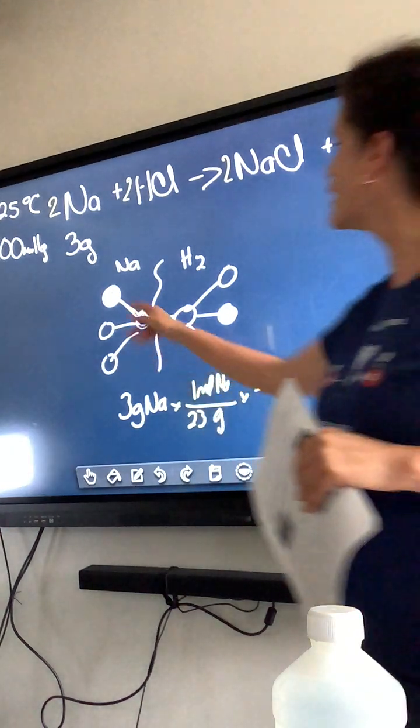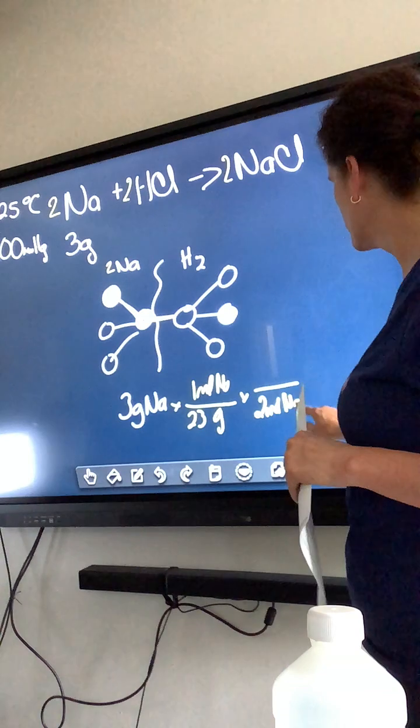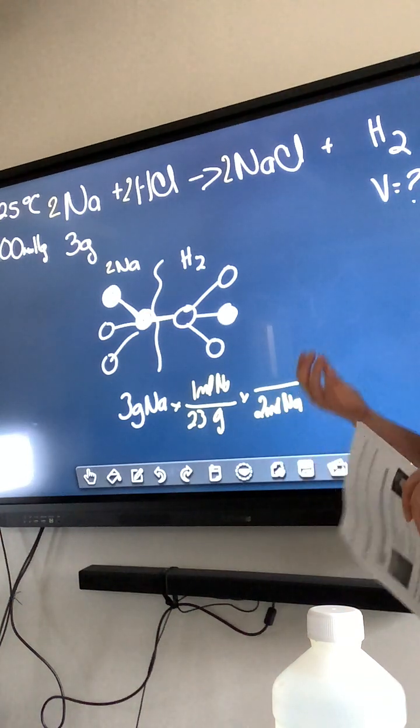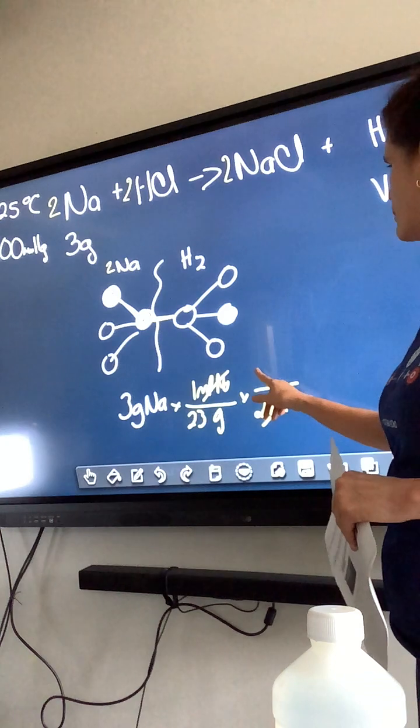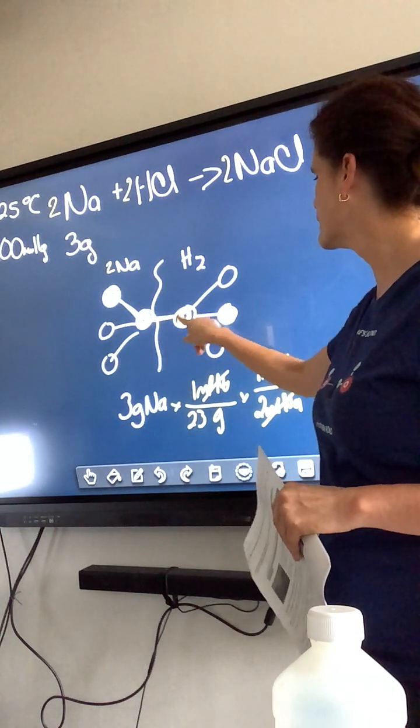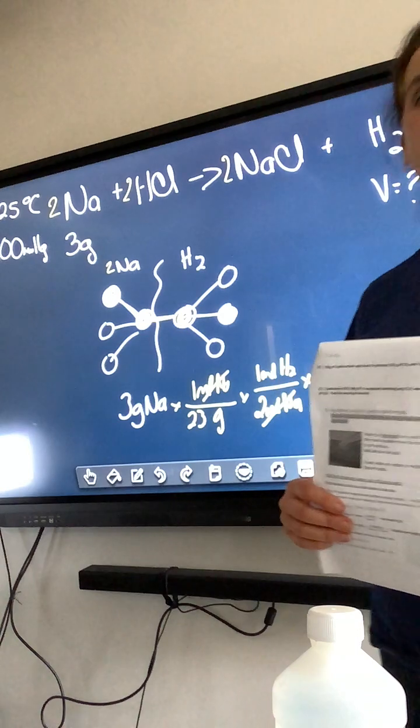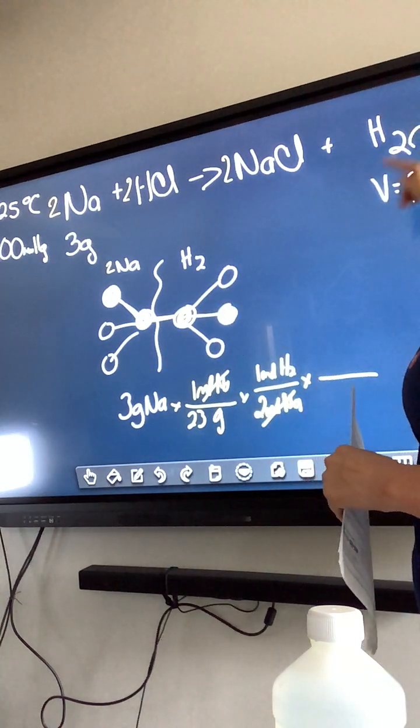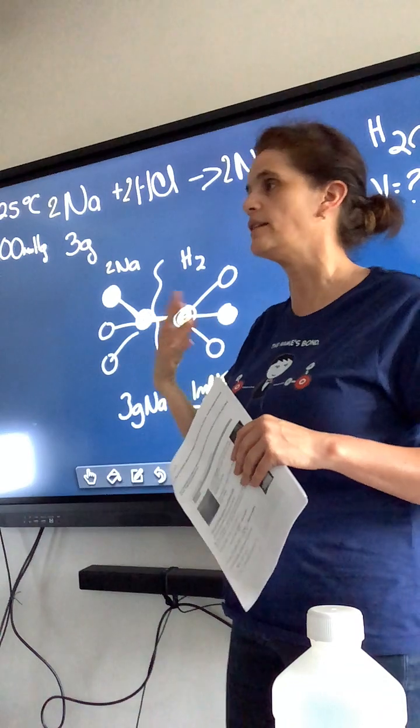Now the stoichiometric coefficients are for every 2 sodiums I make 1 hydrogen. For every 2 moles of sodium, and by the way you really need to put this sodium because people end up forgetting and then they start putting things with hydrogen or other things. That way your sodium is cancelled. And I am going to put this 1 mole of hydrogen. Now I am over here.